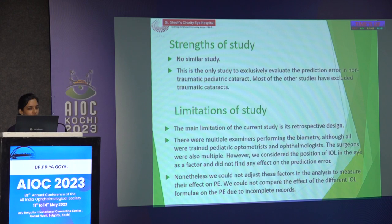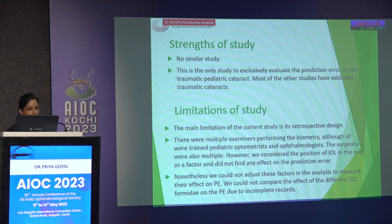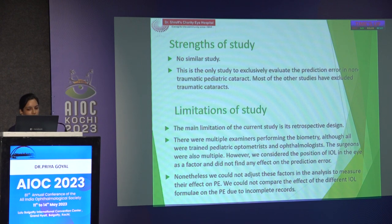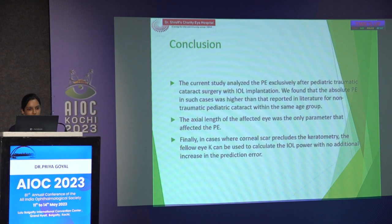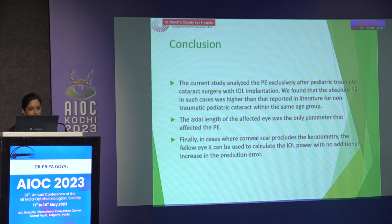The strength of this study is that it is the only study to exclusively evaluate prediction error in traumatic pediatric cataract, as most studies have excluded it. Main limitations include retrospective design, data loss to follow-up, multiple examiners performing biometry, and multiple surgeons involved. To conclude: absolute prediction error in pediatric traumatic cataract is higher than in non-traumatic pediatric cataracts within the same age group; axial length of the affected eye was the only parameter significantly affecting prediction error; and in cases where corneal scar precludes keratometry, fellow eye keratometry can be used.